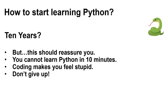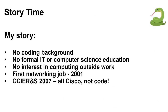My background: I've got no coding background at all as of about two years ago. No formal IT or computer science education — I studied history at university. Computing is not a hobby, other than playing a bit of Call of Duty. My first networking job was in 2001, and in six years I essentially passed the CCIE. But all I did was learn Cisco networking through the Cisco books — CCNA, CCNP, CCIE. I didn't really understand DNS or virtualisation when I became a CCIE, because I was very focused on that DocCD syllabus.